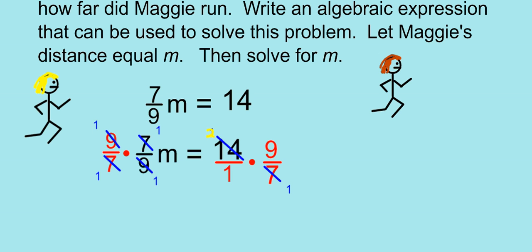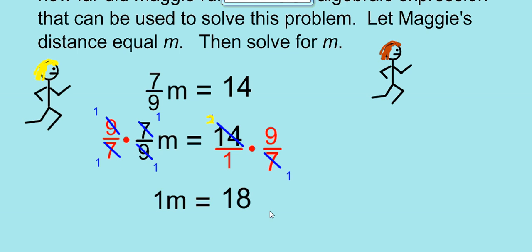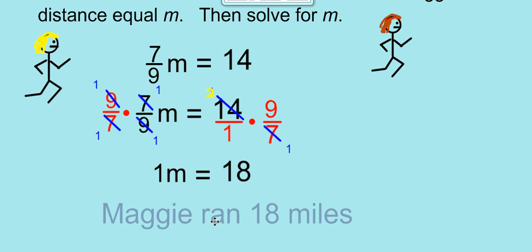And finally, we go to our last step. And our last step is to multiply and then simplify to get our answer. When we do, we get 1m equals 18. And again, 1 times any number, according to the identity property of multiplication, will equal that number. So Maggie's distance is 18 miles.